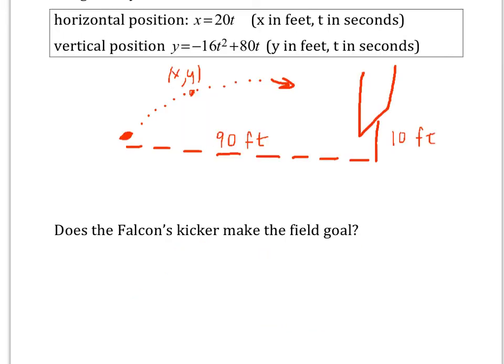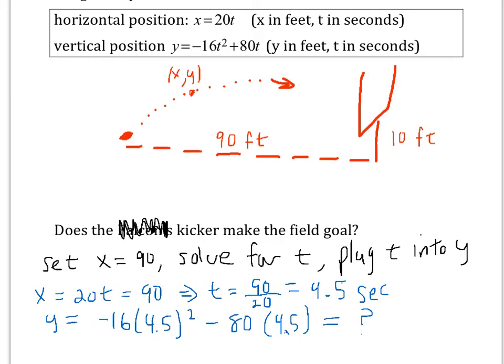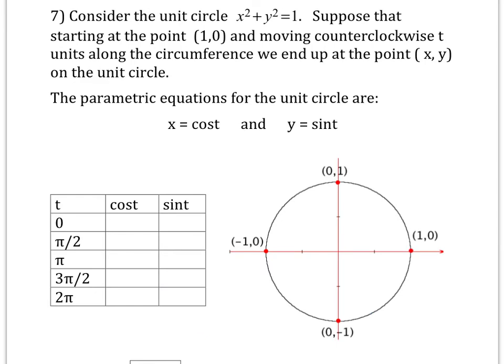The question is, does the kicker make the field goal? So how would you do that? How would you answer this question? So you set the x coordinate equal to 90 feet. And then once you find the value of t, you could plug that into y. And so if you do that, you get x equals 20t equals 90, which means t equals four and a half seconds. And then when you plug 4.5 in for y in the y coordinate, well, I think you know what happened.